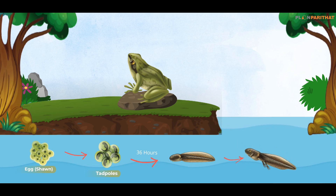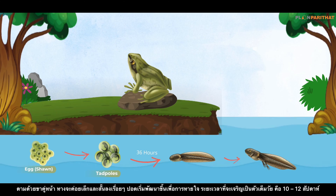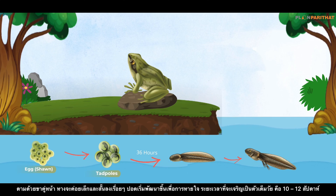After the young tadpole is fully developed, the legs would emerge. Their two hind legs would grow first, followed by the two front legs. The tadpole's tail continues to shrink and its lungs start to develop for breathing. This stage takes around 10 to 12 weeks.